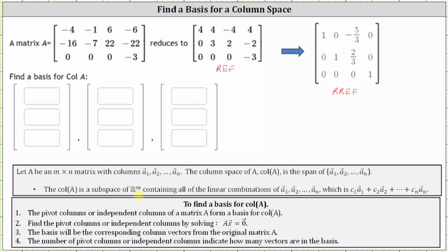The pivot columns or independent columns of matrix A form a basis for the column space. To find the pivot columns or independent columns, we solve A times vector x equals a zero vector. Once we identify the pivot columns, the basis will be the corresponding column vectors from the original matrix A. Because we already have the row echelon form and reduced row echelon form of matrix A, we simply have to determine the pivot columns.